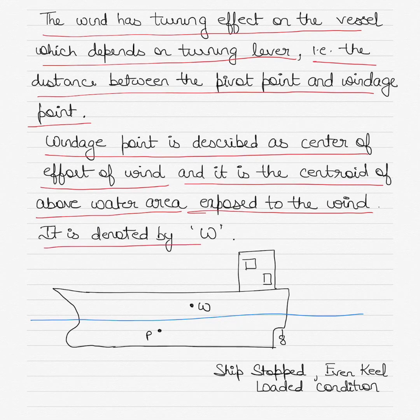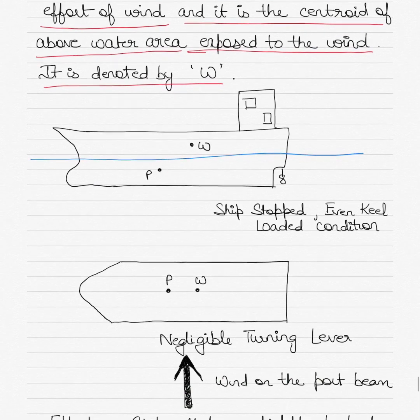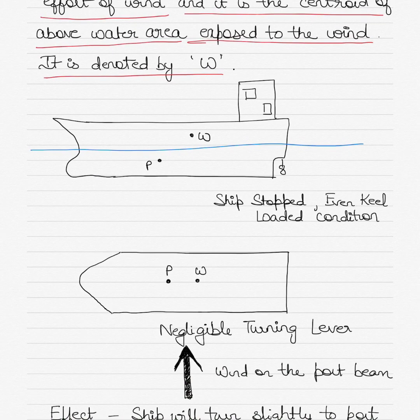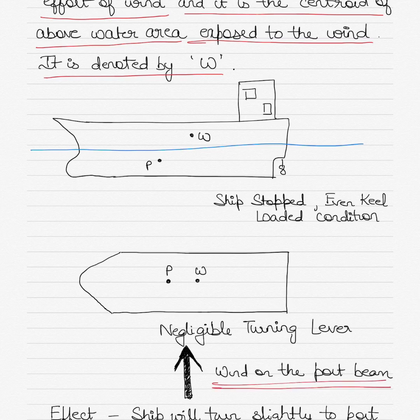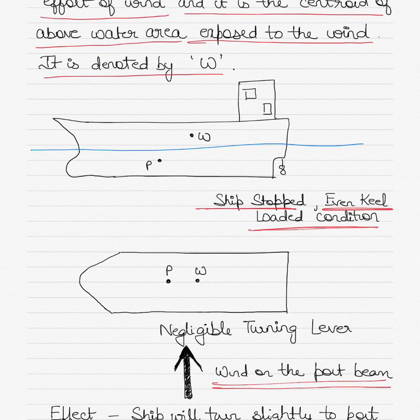The windage point is denoted by the letter W in the diagram. The first diagram shows the port aspect of the vessel, and the second diagram shows the bird's eye view of the same ship where the wind is coming in from the port beam. The vessel is stopped, on even keel — meaning no trim — and in a loaded condition. You can see how the turning lever is defined by the location of the windage point and the pivot point.